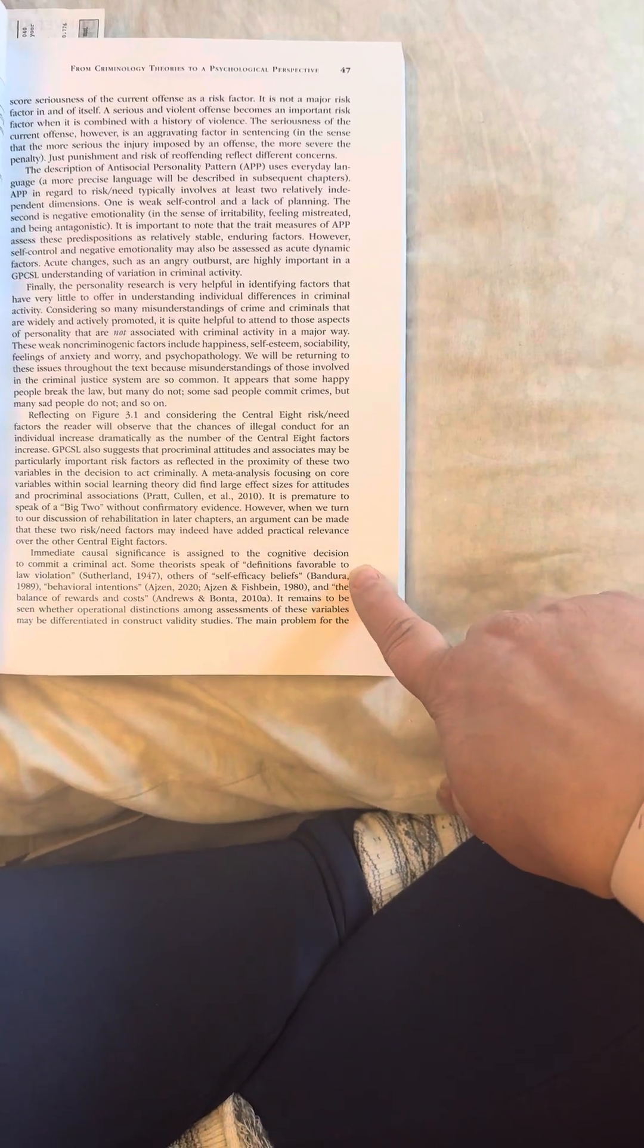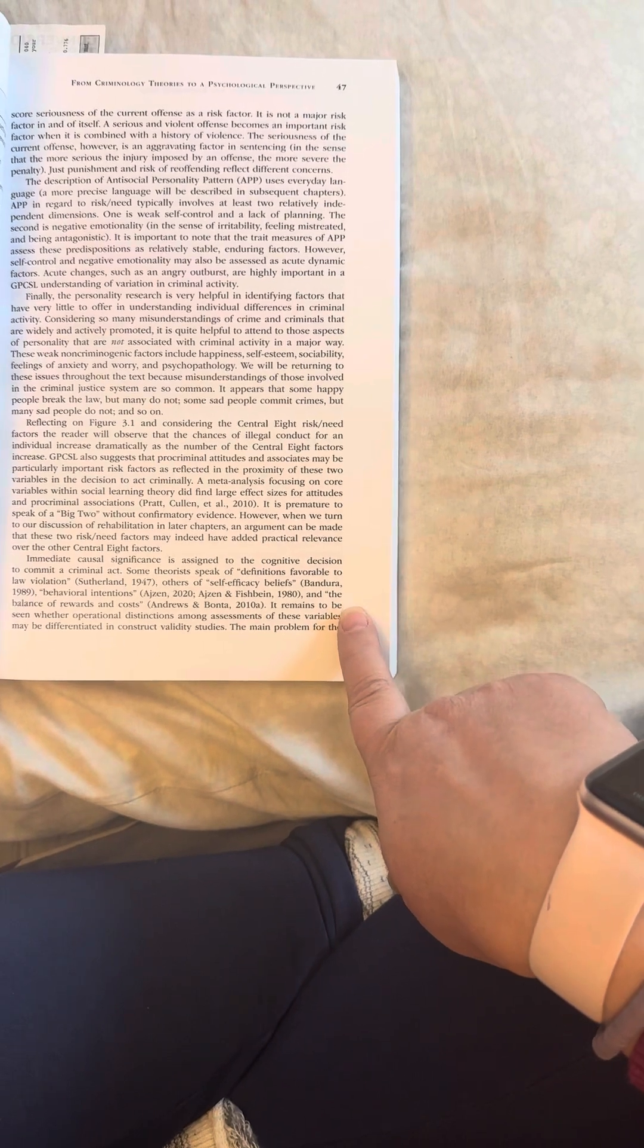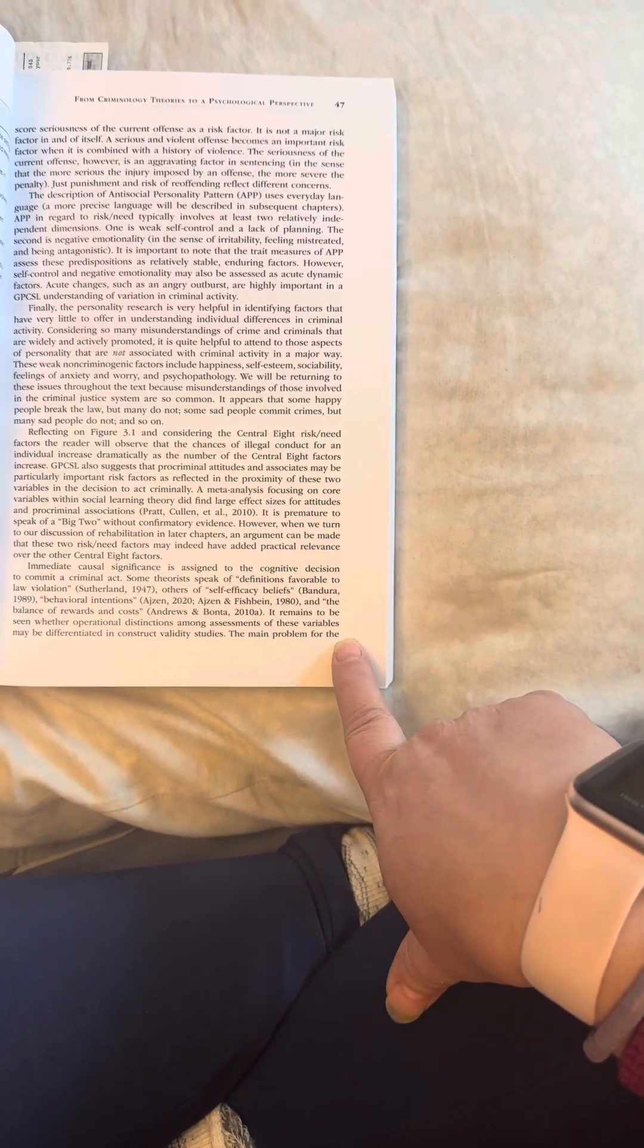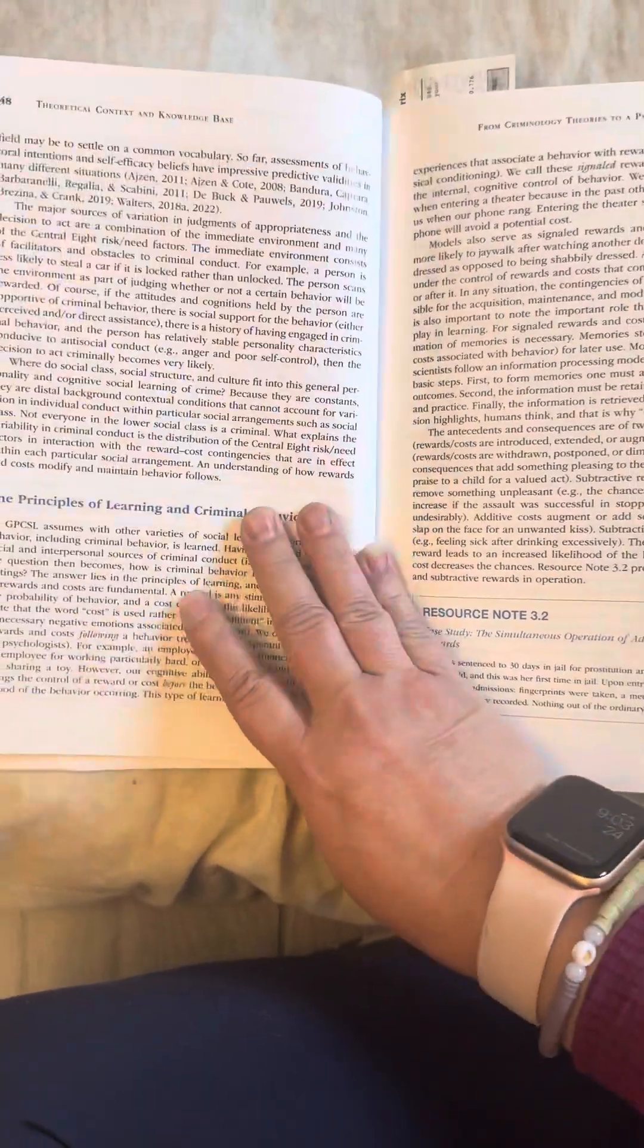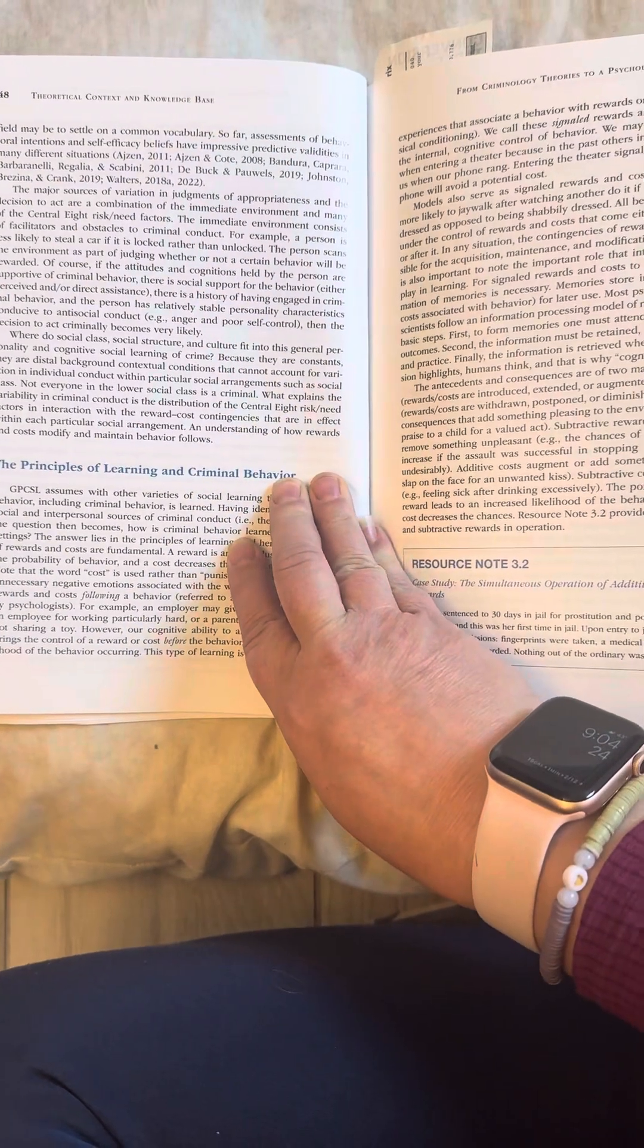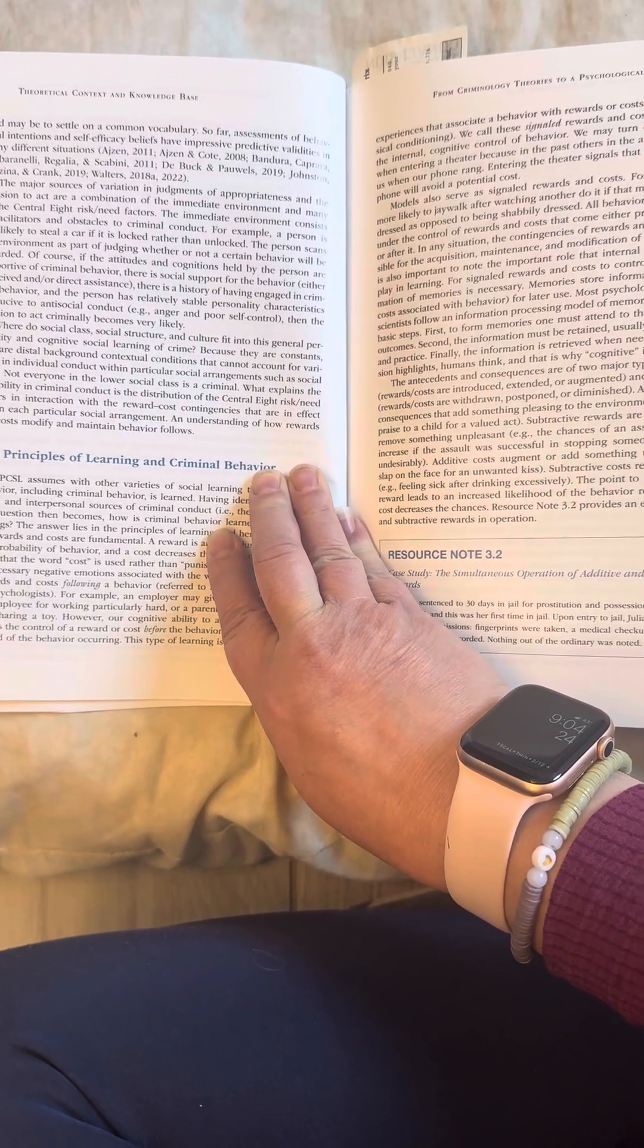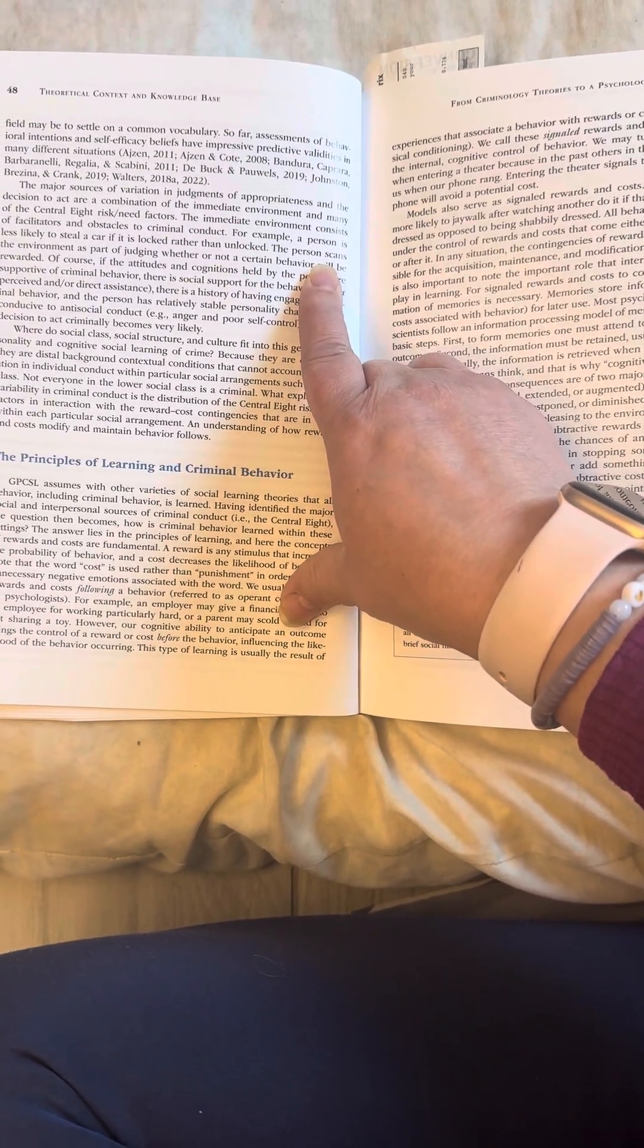Immediate causal significance is assigned to the cognitive decision to commit a criminal act. Some theorists speak of definitions favorable to law violation, others of self-efficacy beliefs, behavioral intentions, and the balance of rewards and costs. It remains to be seen whether operational distinctions among assessments of these variables may be differentiated in construct validity studies. The main problem for the field may be to settle on common vocabulary. So far, assessments of behavioral intentions and self-efficacy beliefs have impressive predictive validities in many different situations. The major sources of variation in judgments of appropriateness and the decisions to act are a combination of the immediate environment and many of the central eight risk-need factors.